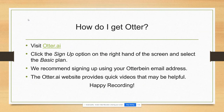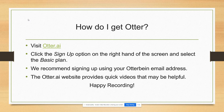So, how do you get Otter? You will want to visit the website at www.otter.ai. From there, you will click the sign-up feature on the right-hand top corner of your screen and select the basic plan option. We also recommend signing up with your Otterbein email address since this is used for educational support purposes. If you have any questions about Otter as a note-taking device or would like to set up a time to explore Otter, please contact our office. The Otter website also has helpful videos you can explore at your own pace.